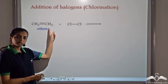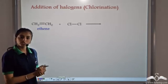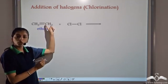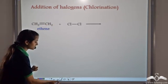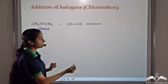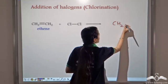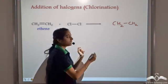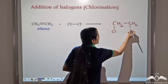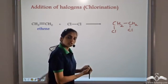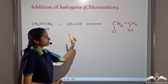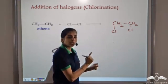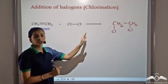We have ethene, which is made to react with chlorine — this is a chlorination reaction. Unsaturated compounds tend to become saturated, meaning the double bond breaks into a single bond. So CH₂=CH₂ (ethene) reacts with chlorine: the double bond breaks, and each chlorine atom attaches itself to one carbon atom, forming a single covalent bond. The unsaturated compound is thus changed into a saturated compound.